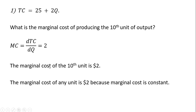In fact, the marginal cost of producing any unit is $2, because marginal cost is always constant and it is always equal to 2. So if we produce the fourteenth unit of output, the marginal cost is $2. The fifteenth unit of output — same thing. All right, let's move on to another example.